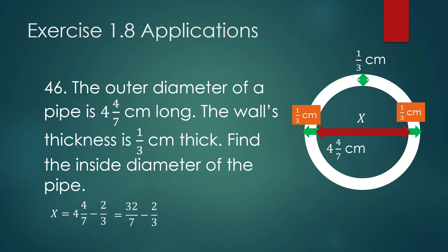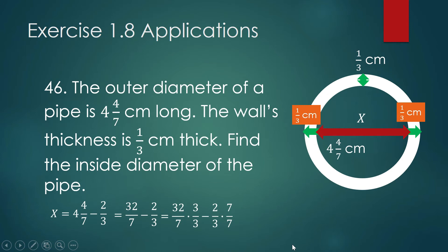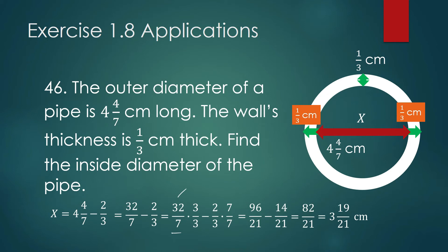We can write 4 and 4 over 7 as 32 over 7 — because 7 times 4 is 28, plus 4 is 32. The LCD here is 21. Some students already know it's 21, so 21 divided by 7 is 3, times 32 — that's fine. I prefer to multiply by 3 over 3, which is just one, to get a common denominator of 21. That gives us 96 minus 14 over 21.